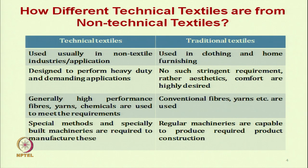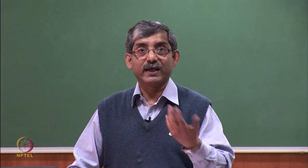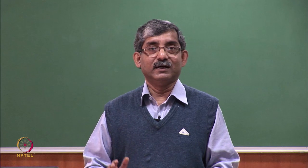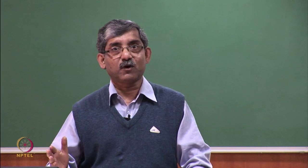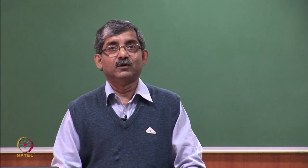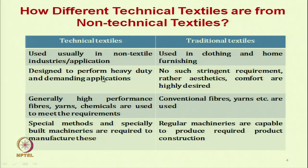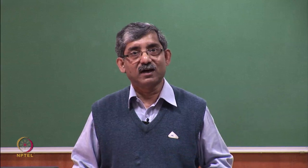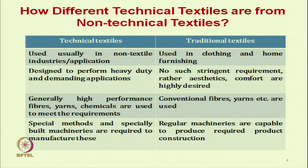Let us try to understand the difference between technical and traditional textiles. In technical textiles, we use the product mainly in non-textile industries. Like automotive textiles — the automotive industries use filter fabric — whereas traditional textiles are basically limited to clothing and home furnishing.